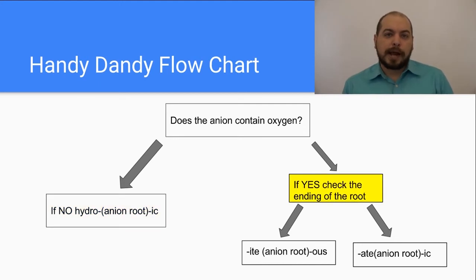Now if the anion does contain oxygen, we're going to follow the flowchart down to the right. And at this point now we need to assess if the polyatomic ion which contains oxygen ends in -ate or -ite. If the polyatomic ion ends in -ite, like sulfite or nitrite, then the acid associated will end in -ous, O-U-S.